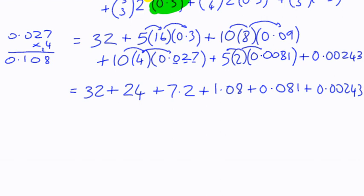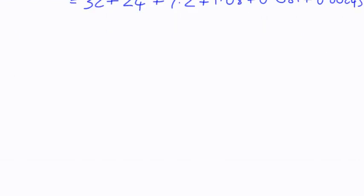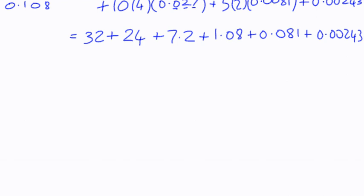It's just a matter of adding these up. If we add up the whole numbers, 32 and 24 is 56, plus 7 is 63, plus 1 is 64.